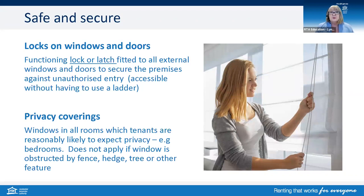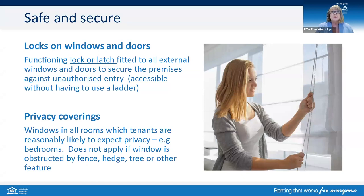In relation to locks on windows and doors, the legislation states that a functioning lock or latch must be fitted to all external windows and doors to secure the premises against unauthorised entry. This applies to windows and doors that do not require a ladder to access, and the purpose is clearly to ensure the premises are secure. Every property needs to be assessed on a case-by-case basis — not every property is going to be the same. The minimum standard is a functioning lock or functioning latch fitted to all those external windows and doors.